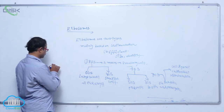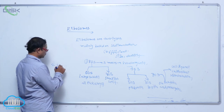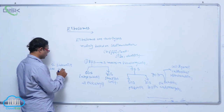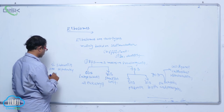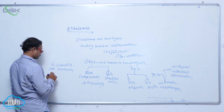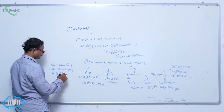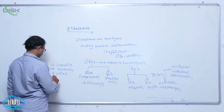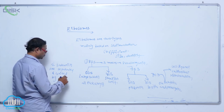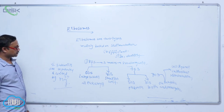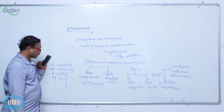These two subunits of ribosomes are separated and united by magnesium ions.